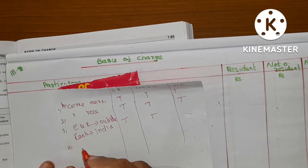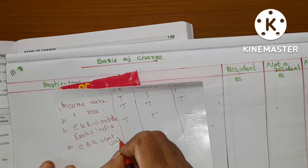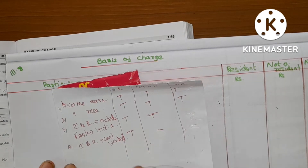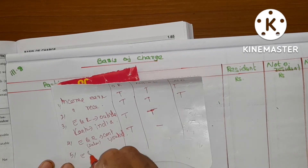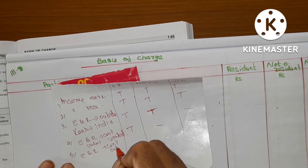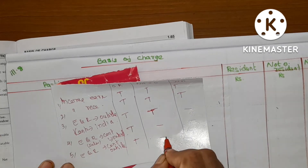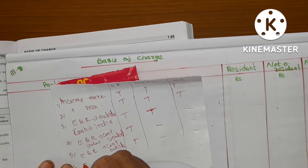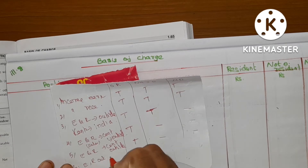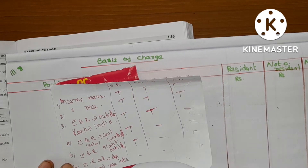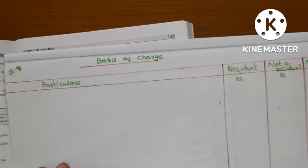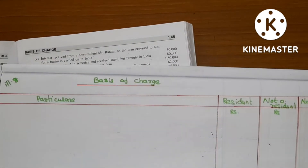First case: income earned and received outside, and control outside. Fifth case: this is the salary. Any other income — earning, receiving, controlling all outside: only ordinary resident pays tax in this case. Sixth case: earning, receiving outside — so the amount applies accordingly.